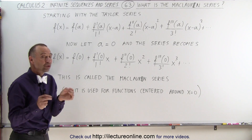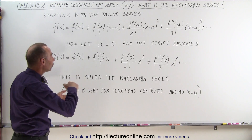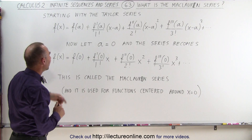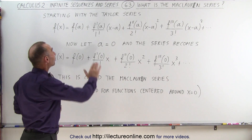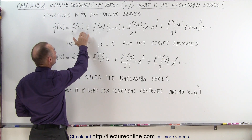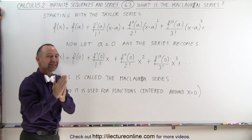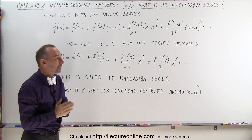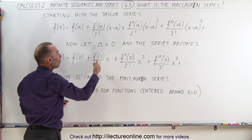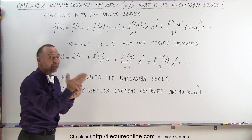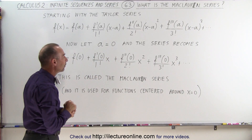Now all we have to do to turn the Taylor series into a Maclaurin series is to let a go to zero. Remember that the Taylor series was used for a function centered about the point x equals a. By setting a equal to zero, we're now allowing the function to center about the point x equals zero.